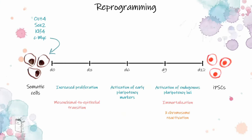However, different approaches have been developed to reprogram differentiated cells back into a pluripotent state through experimental manipulation. In 2006, Dr. Shinya Yamanaka demonstrated that the activation of a defined set of factors in fibroblasts was enough to directly reprogram these somatic cells to a pluripotent state.